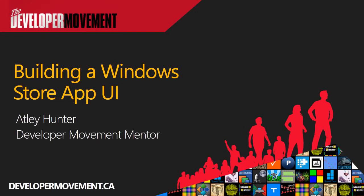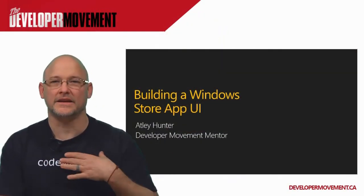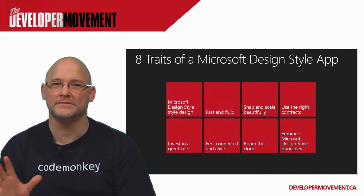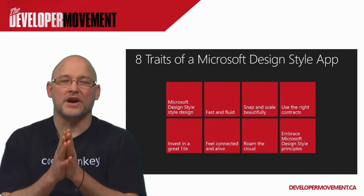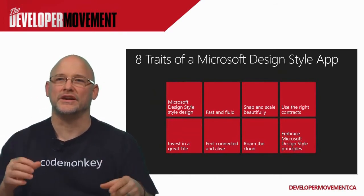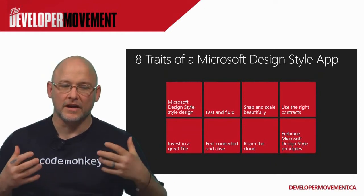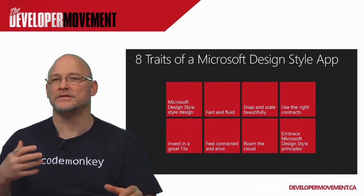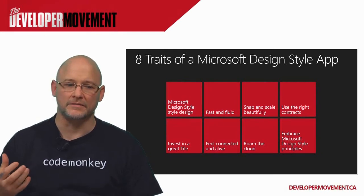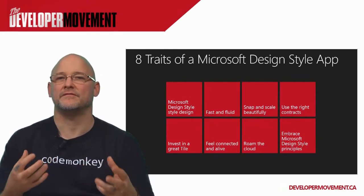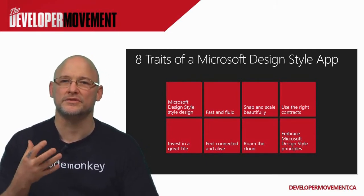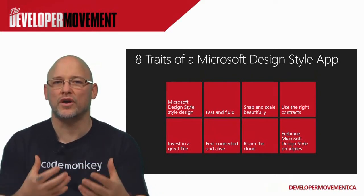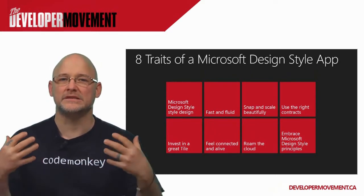We're back, and here what we're going to be doing is looking at building a Windows Store app and what the UI needs. My name is Atlee Hunter. What we're going to be talking about are basically the eight traits of a really good modern UI design, utilizing the best parts of the Microsoft UI design pattern and making sure that we create something that's really fast and fluid, lightweight, featuring and focusing on the content, getting the user excited and immersed in what you're trying to show them.